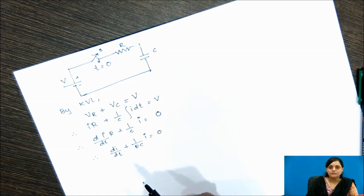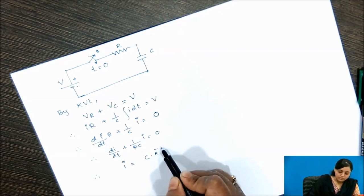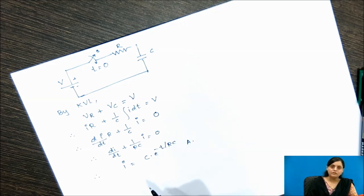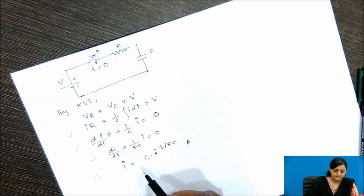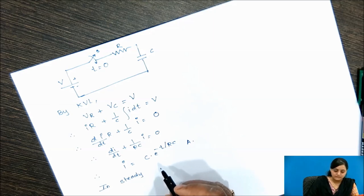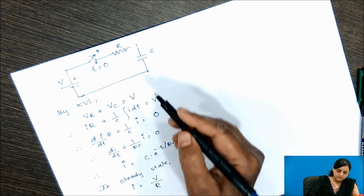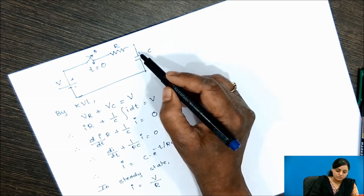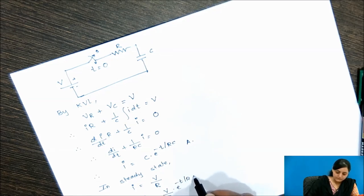This is a first-order linear differential equation whose solution is only a complementary function. The solution is i = K·e^(−t/RC) amperes. To find the constant K, we use initial conditions. At t = 0, the capacitor acts as a short circuit in the transient state, so current flowing through the circuit is i = V/R. Substituting, we get i = (V/R)·e^(−t/RC) amperes, which is the current flowing through the DC RC circuit.